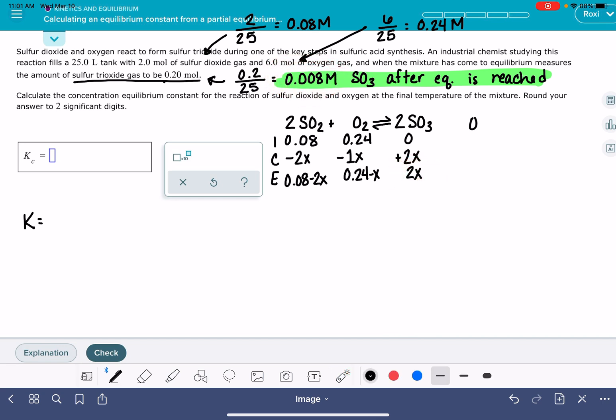So when we get to equilibrium, we have 0.008 molar SO3. And we know also that when we get to equilibrium, we have 2x SO3. So we can just set these two terms equal to each other. They both represent the same thing, just two different ways of representing it. Again, the actual concentration of SO3 at equilibrium, which is equal to our expression for the concentration of SO3 at equilibrium. We'll use this to solve for x, 0.004.